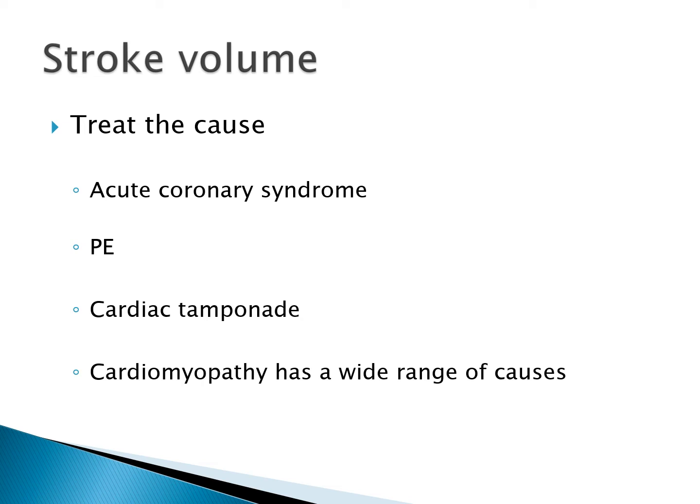Where there is poor stroke volume, treat the cause. Is it due to an acute coronary syndrome — do they need to go to the cath lab for PCI? Have they had an acute PE and need thrombolysing? Is this cardiac tamponade requiring a pericardial drain? Cardiomyopathy has a wide range of causes, sadly not all of which are reversible.